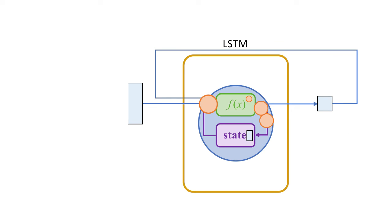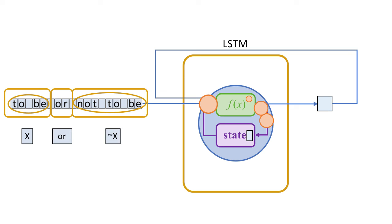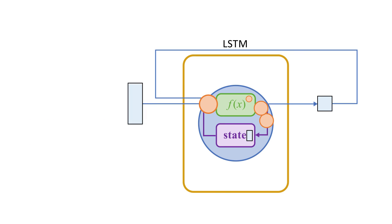So, LSTM nodes are certainly more complicated than regular recurrent nodes, but this makes them better at learning the complex interdependencies in sequences of data. And ultimately, they're still just a node, with a bunch of parameters. And these parameters are learned during training, just like with any other neural network.